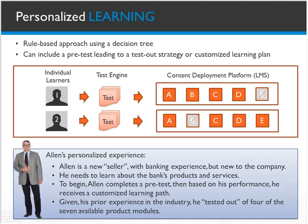For example, learner one mastered section E but needed to take A, B, C, and D. Learner two mastered section B but would need to take A, C, D, and E. Thinking about Alan — a new seller in banking but new to the company — he needs to learn about the bank's products and services. He begins by completing a pretest, and based on his performance, he receives a customized learning path.